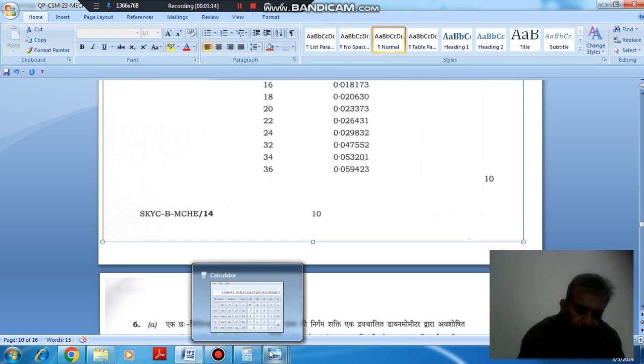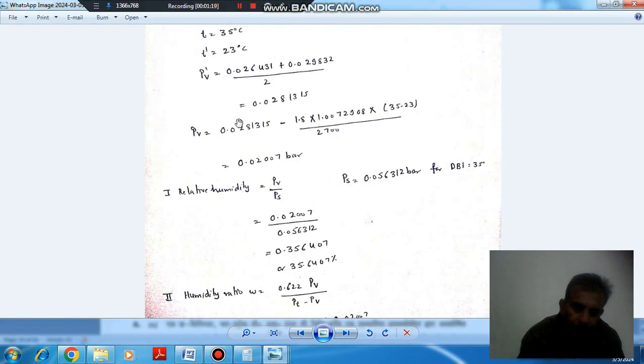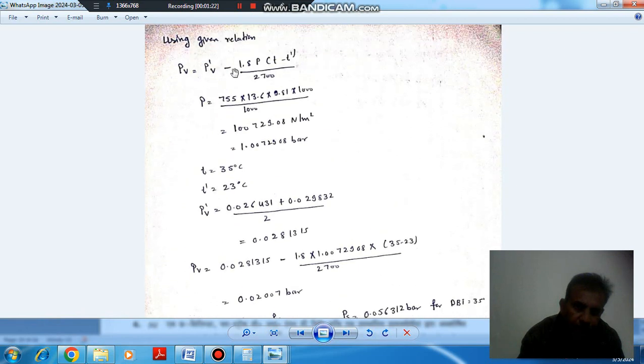Now, first of all, using this equation P_V equals P'_V minus 1.8 P bracket T minus T' divided by 2700. Here, P is barometric pressure and barometric pressure is given 755 mm of Hg. Density of Hg is 13.6 into 1000, so it will be 13.6 into 1000 into 755 into 9.81 divided by 1000.